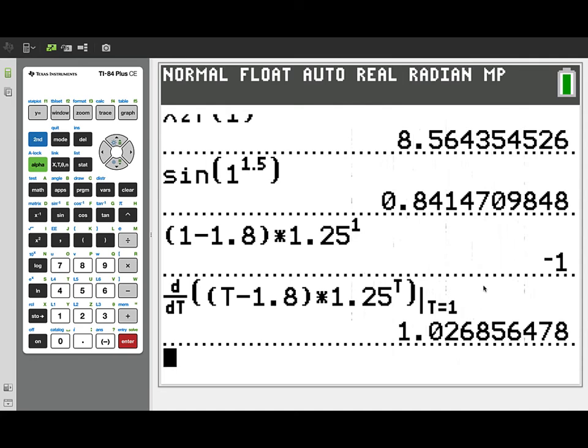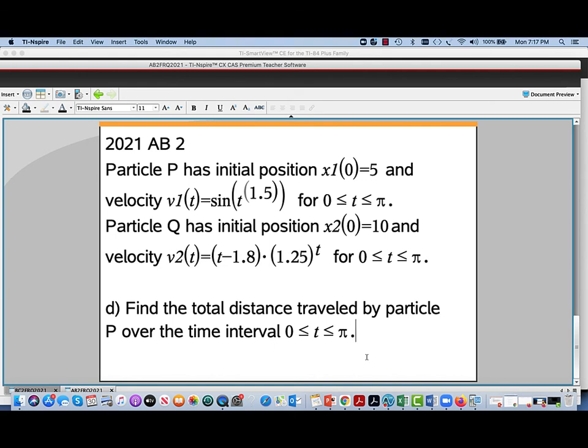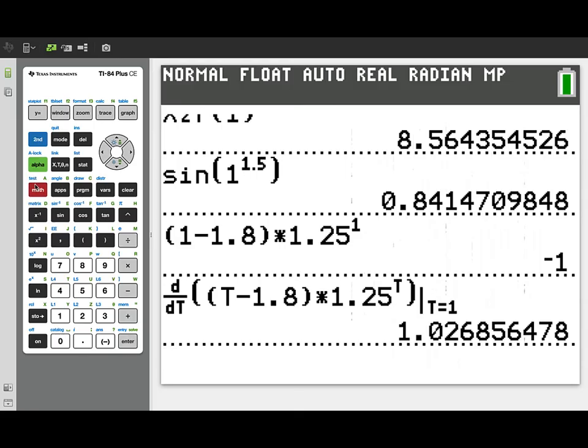All right, now let's move on to part D. We're asked to find the total distance traveled by the particle P over the entire time interval from 0 to π.